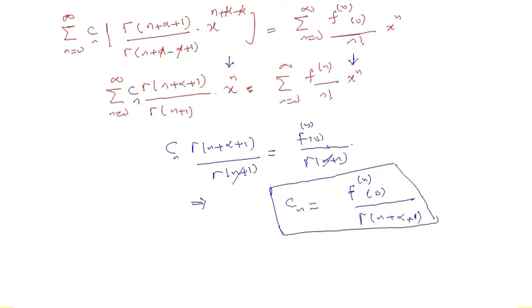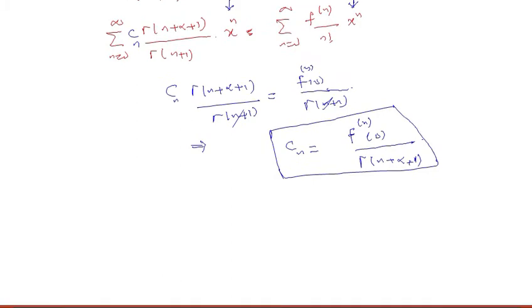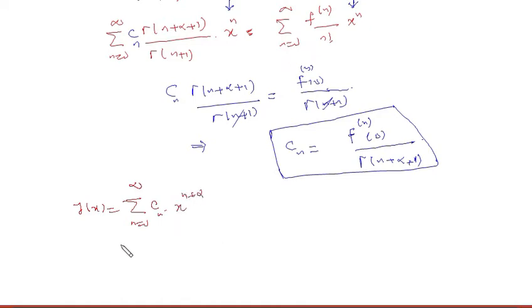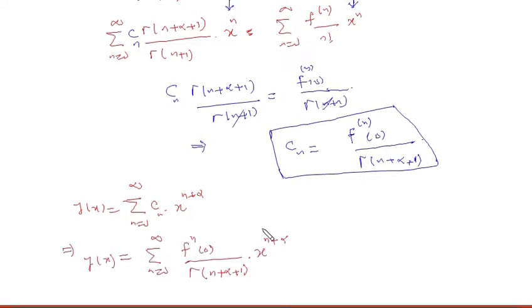Plugging this value of c_n back into our assumed solution y(x) equals the summation from n=0 to infinity of c_n times x to the power n plus alpha, we now substitute the expression for c_n to obtain the full power series solution.